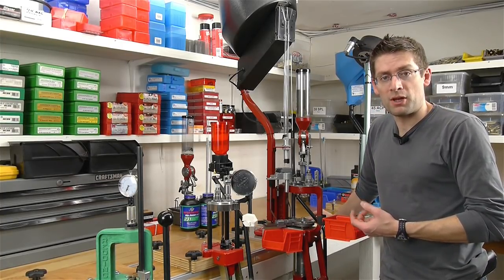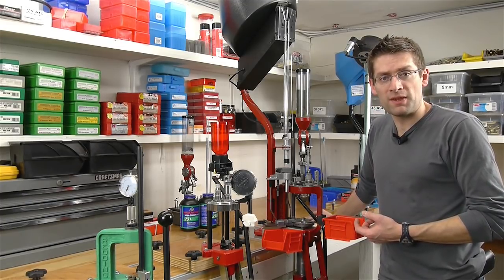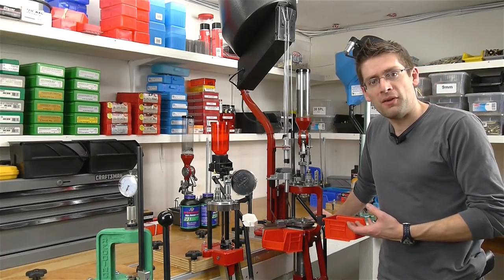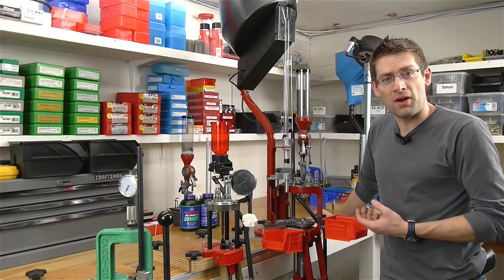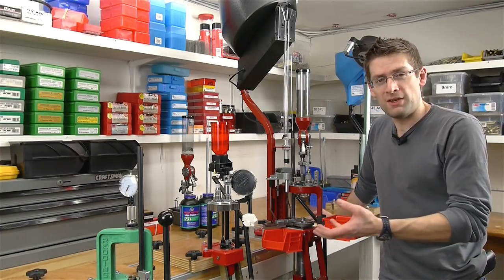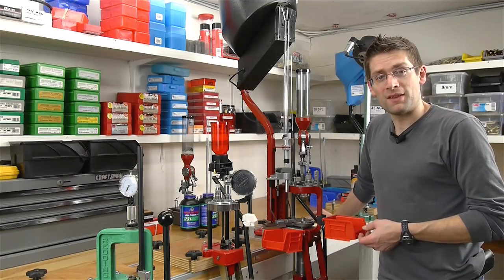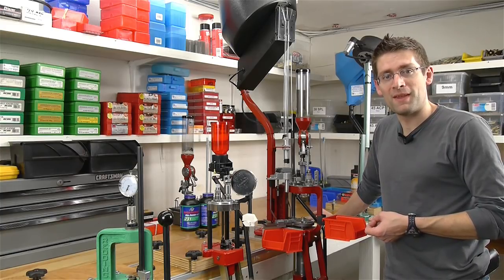You can find a lot of additional resources on ultimatereloader.com, including a complete list of everything you need to get started loading pistol ammunition if you look in the Info Center on the left bar. I hope this video has helped you to know what the different types of presses are and how their features have different advantages and disadvantages, and hopefully this video helps steer you in the right direction when it comes time for you to buy your first reloading press.